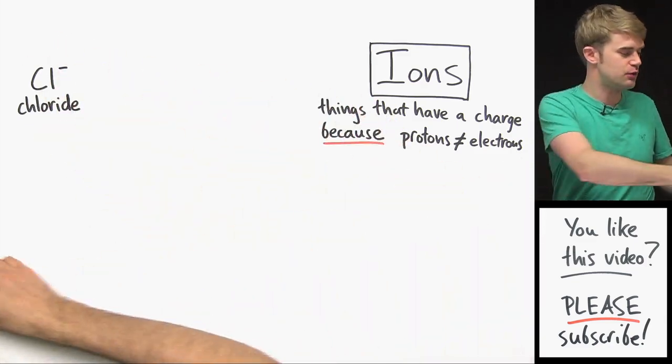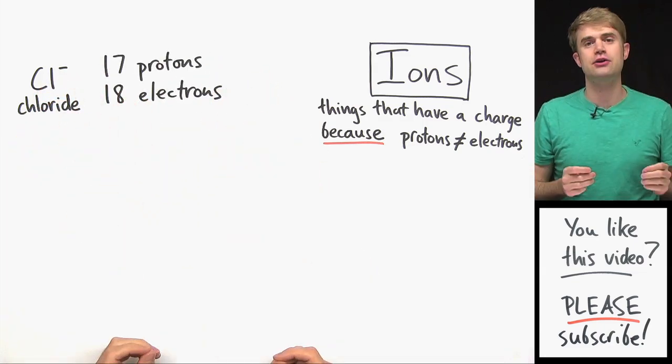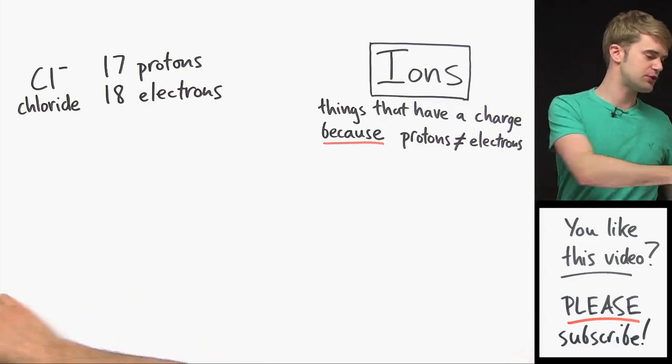For example, there's Cl- which is chloride. It has 17 protons and 18 electrons. It's got that one more electron so it has a one minus charge.